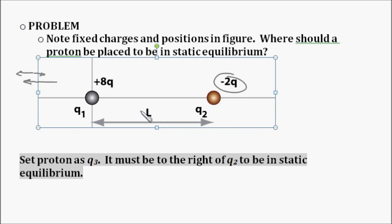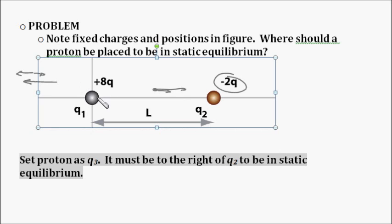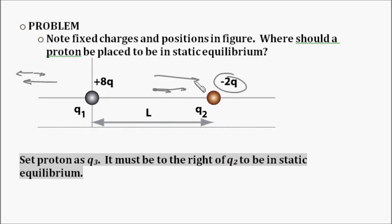So no static equilibrium. What if we put a positive charge here? Well it's going to be pulled, a proton we said, in this direction. But it's also going to be pushed away in this direction by charge 1. So no matter where you put it in between there will always be a net force in that direction.